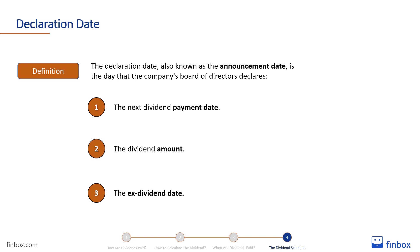The declaration date, also known as the announcement date, is the day that the company's board of directors declares the next dividend. In addition to the next dividend payment date, the company informs its shareholders of the dividend's amount and the ex-dividend date.